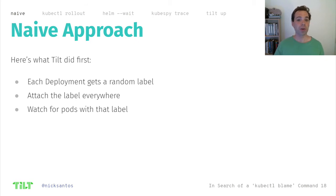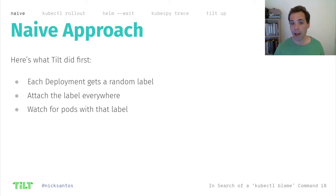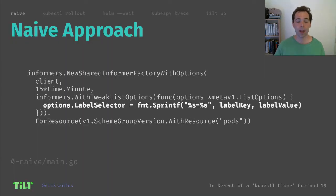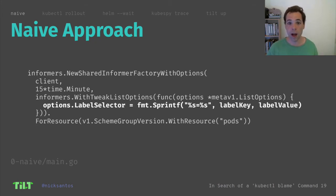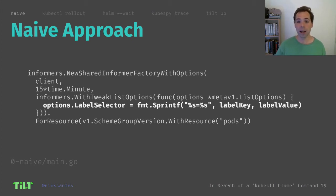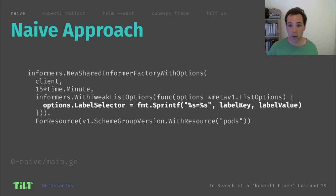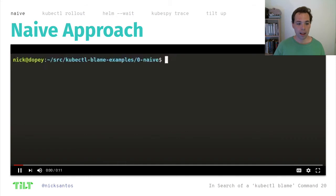The first example is what the Tilt team did first. Again, we thought this would be easy. Each deployment would get a label — for example, 'Deployed at 10 AM, January 10th.' If you see a pod with that label, you know it belongs to this deployment. Here's what the code looked like using the Kubernetes Go client library, Client Go. Client Go gives you an object called an informer. An informer handles watching for Kubernetes objects, retrying when there's an error, and notifying your code about every change. We can configure it to only watch pods with the label we care about.